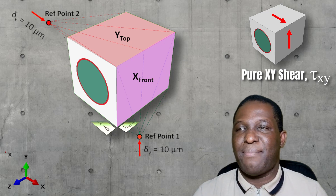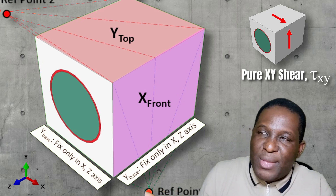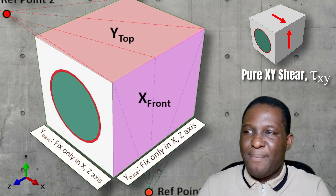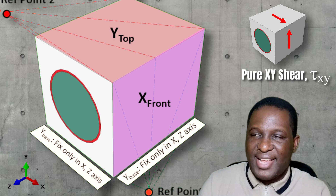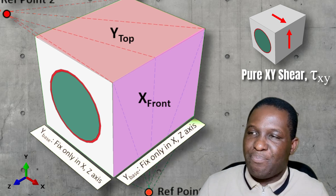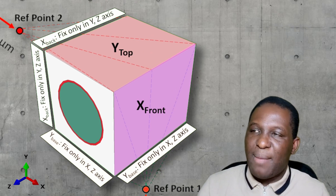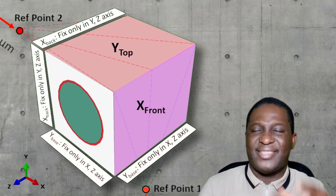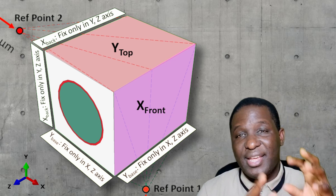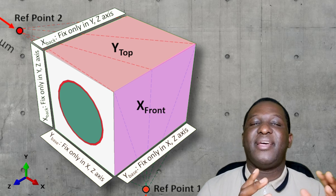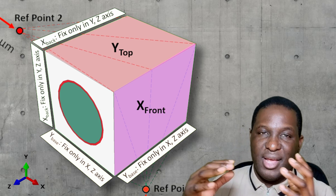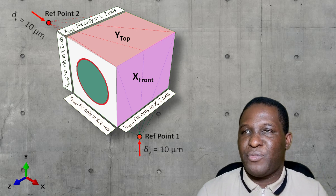What about the boundary conditions? On the Y base, I'm going to fix it in the X and Z axis. And on the X back, I'm going to fix it in the Y and Z axis. This is very critical because once you apply this loading in the right way, you're going to generate the right kind of shear deformation.